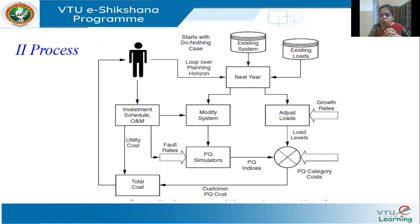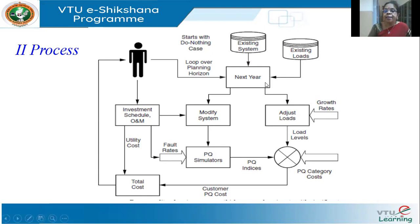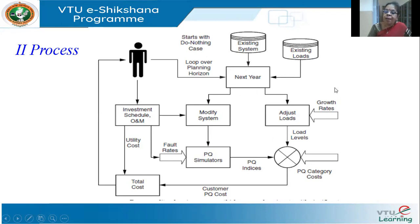This is the planning process — conventional and risk-based. Next is the process itself. I have the existing system and the existing load, and we start with 'do nothing' as the starting point. Then I consider the next year and make a forecast. With the existing load and existing system, I make a forecast, and if necessary, I modify the system and adjust the loads, taking into account the growth rate to make a prediction of the load level.